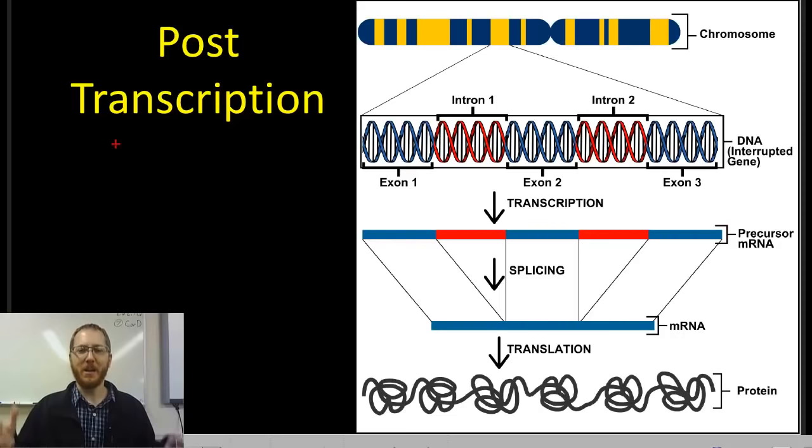For eukaryotes, we have a nucleus. Because we have this nucleus, there's a barrier where ribosomes are outside the nucleus and RNA is inside. We can control this process better. In eukaryotes, we have a post-transcriptional process, also called RNA processing, where we can modify our RNA before we let it be translated.